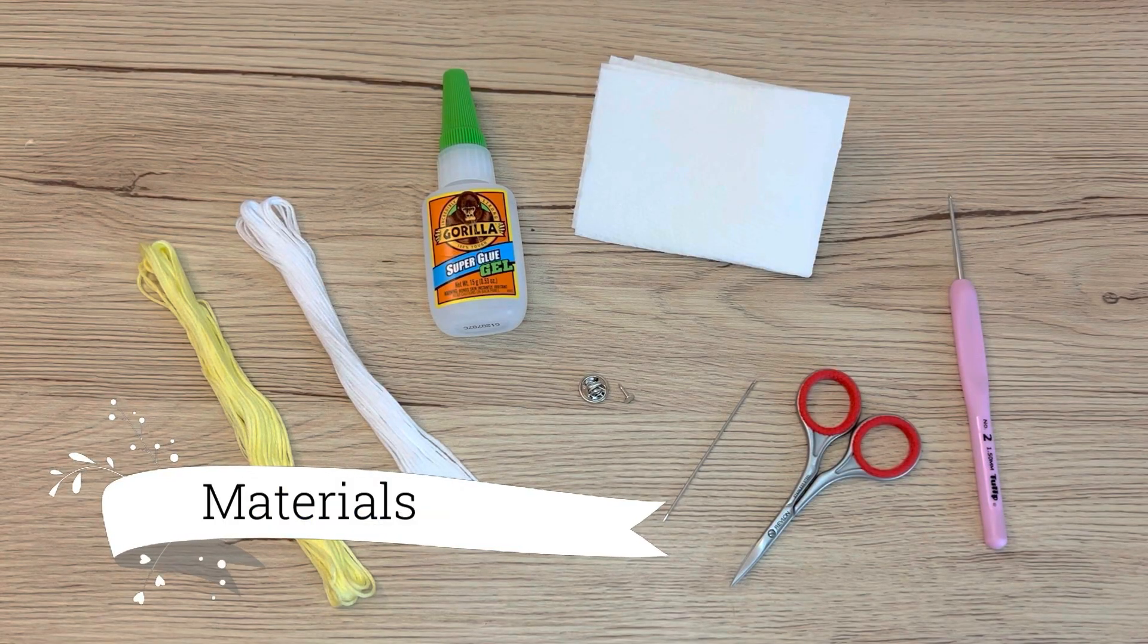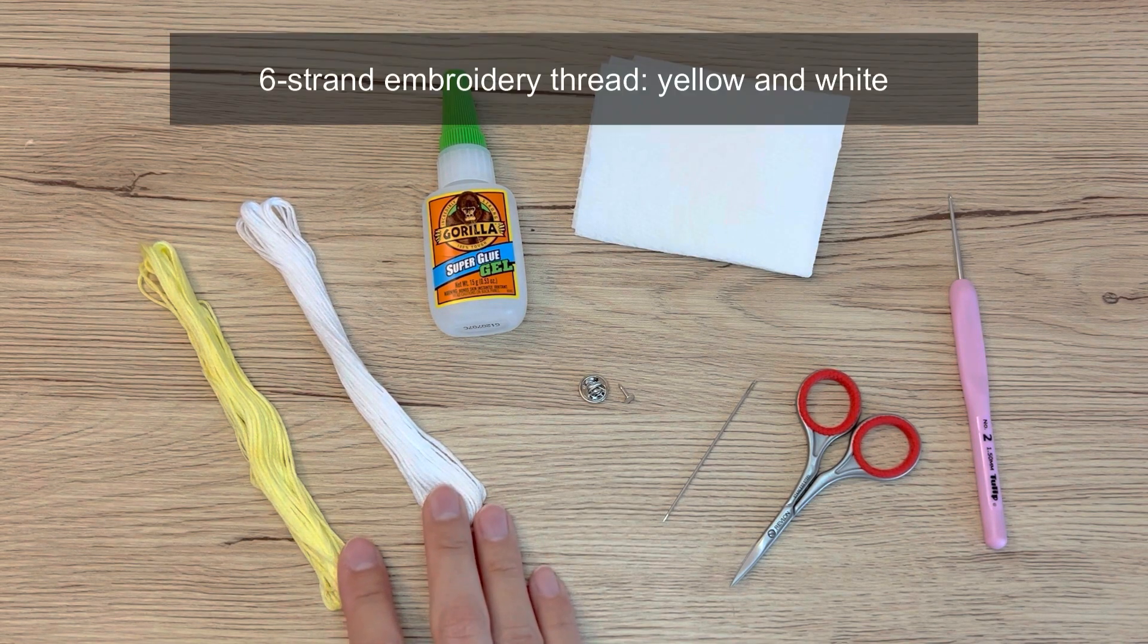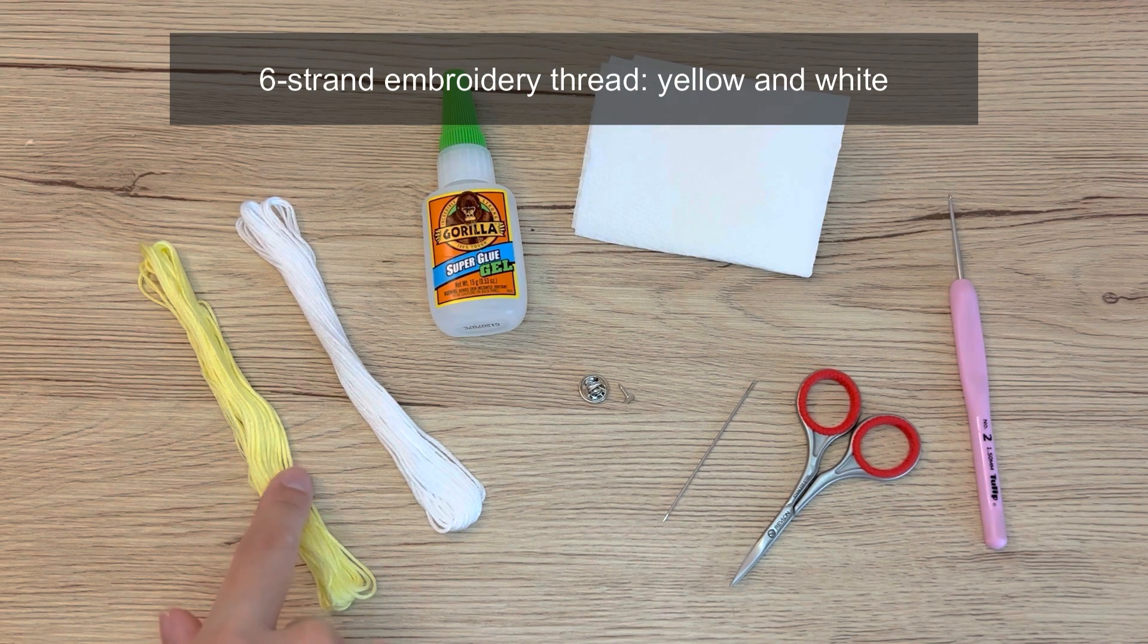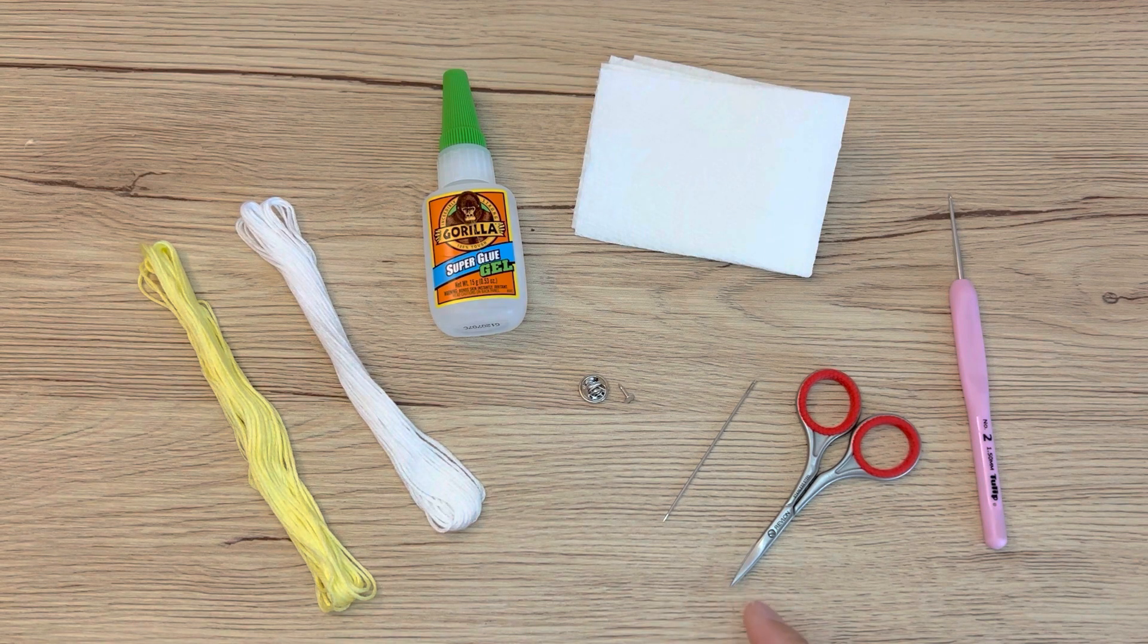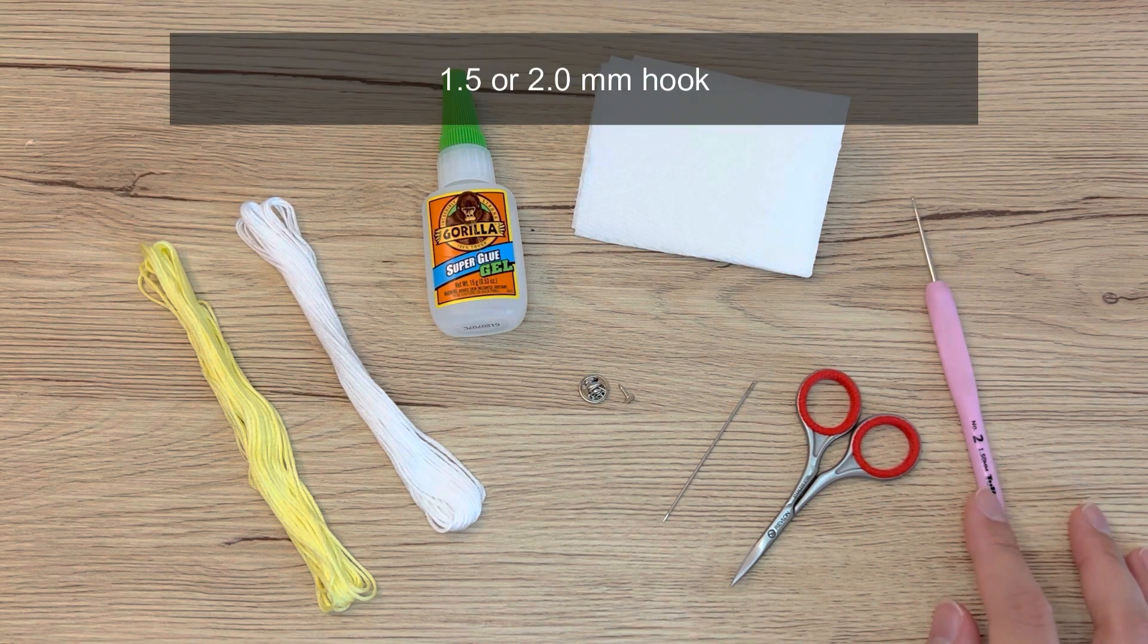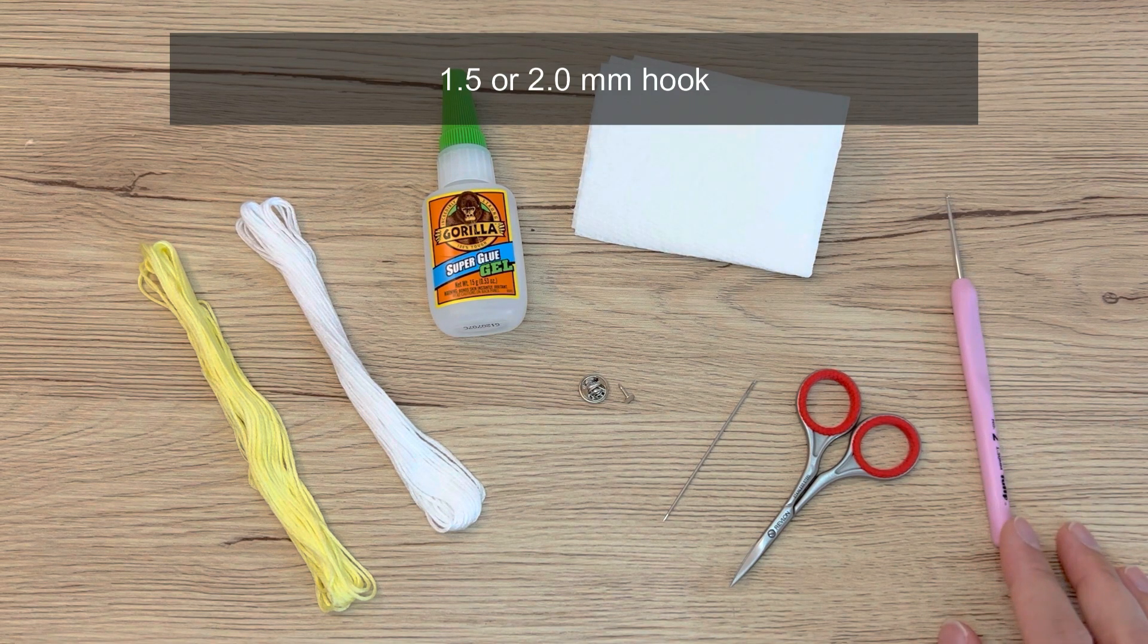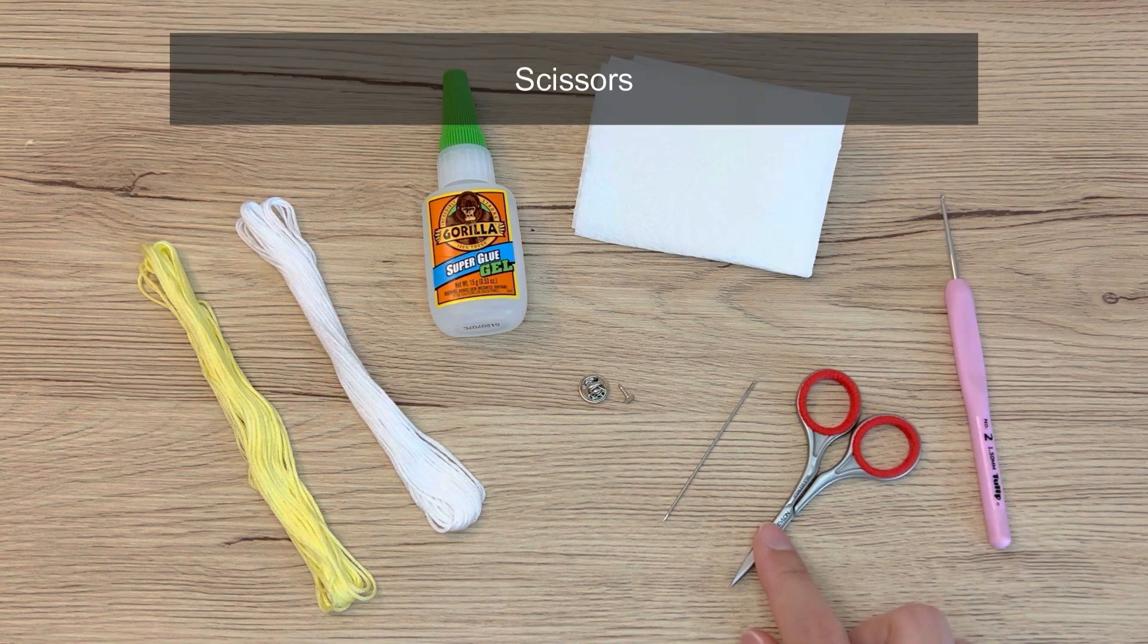In this tutorial, here are the materials that you will need. First off, embroidery thread. These are six strand embroidery thread in yellow and also in white color. You will also need 1.5 mm hook. If you don't have this exact one, you can use anywhere in between 1.5 to 2.0 mm hook. Scissors.